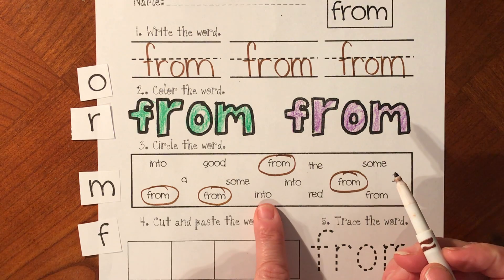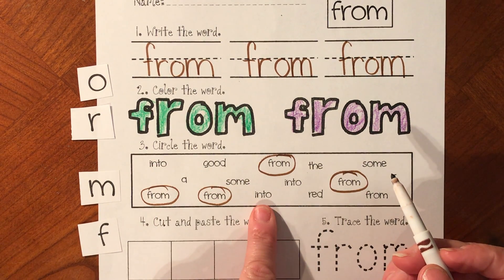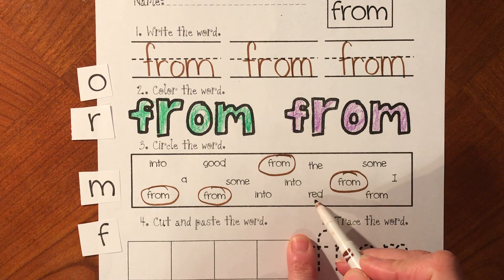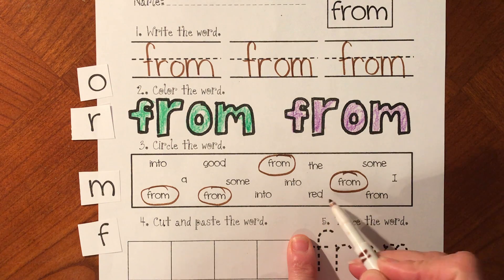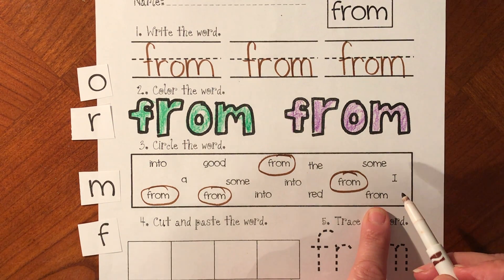What's that word? Into. We don't want into. Well, that's a color word. What's that one? Red. Red. We don't want red. What's this last word? From.